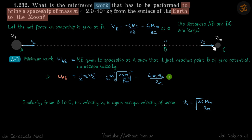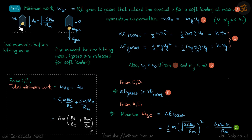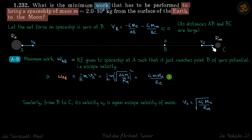After that the spaceship needs to be retarded to zero velocity for a soft landing. We have a rocket about to hit the surface of the Moon, and at that moment its velocity is the escape velocity of the Moon: √(2·G·M_M / R_M). Just before hitting the Moon, gases are released with mass m_gas and velocity v_gas for a soft landing, which means the velocity of the spacecraft becomes almost zero. From B to almost hitting the Moon there is no external work done.